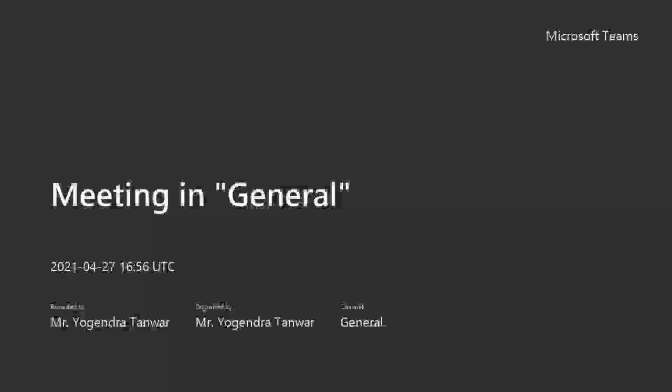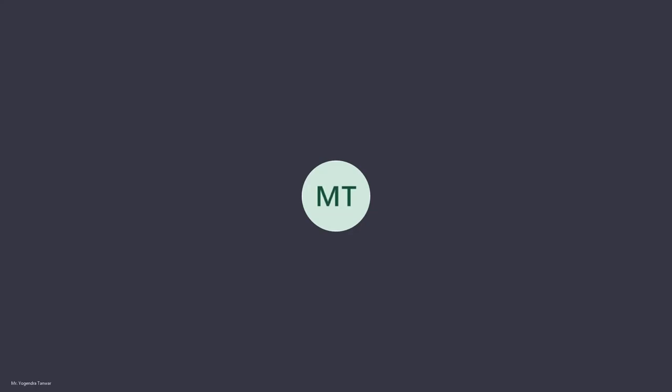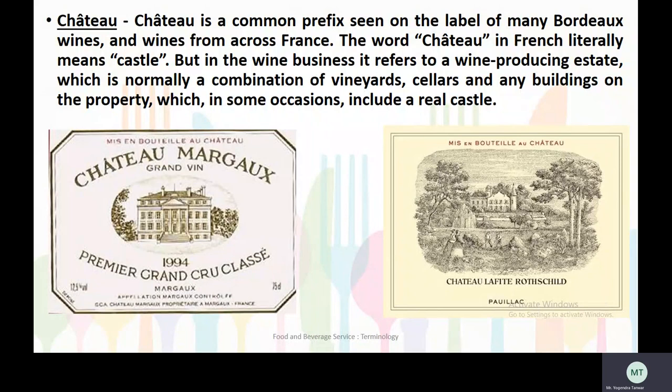The word chateau is seen on the labels of many Bordeaux wines and wines from across France. Chateau in French literally means castle. But in the wine business it refers to a wine producing estate, which is normally a combination of vineyards, cellars, and any buildings on the property, which in some occasions include a real castle.